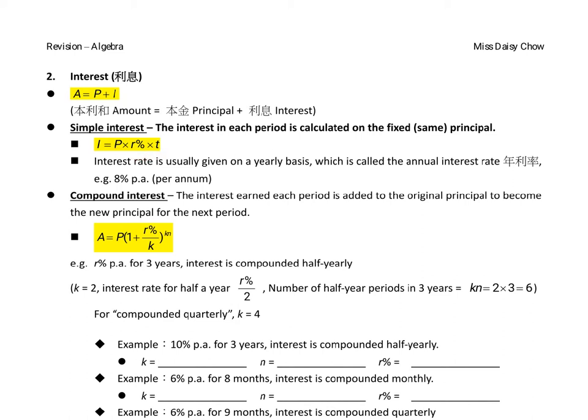The second formula you have to remember would be the simple interest: I equals to P times r% times t. So if you want to find amounts, 那又怎樣呢？那你將 interest 再加 P，將利息加本金，那就會出 amount.